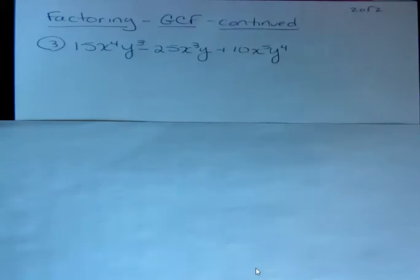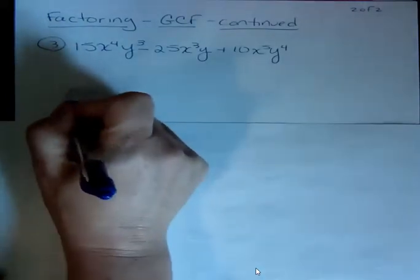Well, the common factor for the numbers 15, 25, and 10 is 5. So I'm going to, that's the greatest common factor.